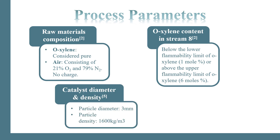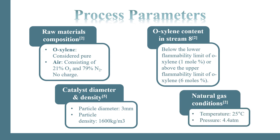a 3mm diameter catalyst is used with a density of 1,600 kg per m³. The natural gas used is at 25 degrees Celsius and 4.4 ATF.